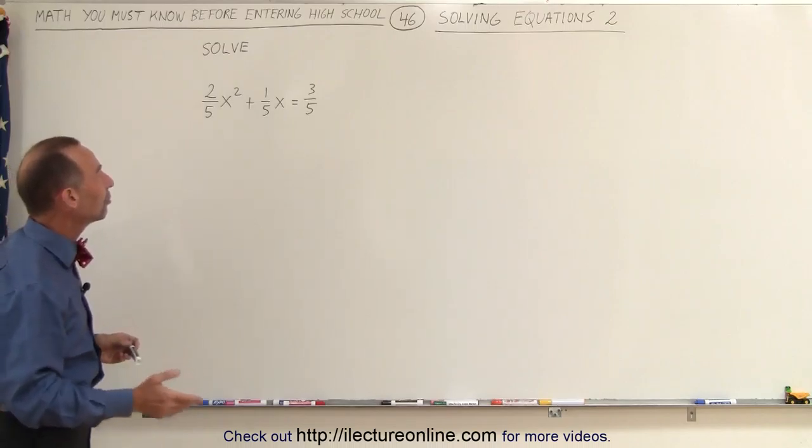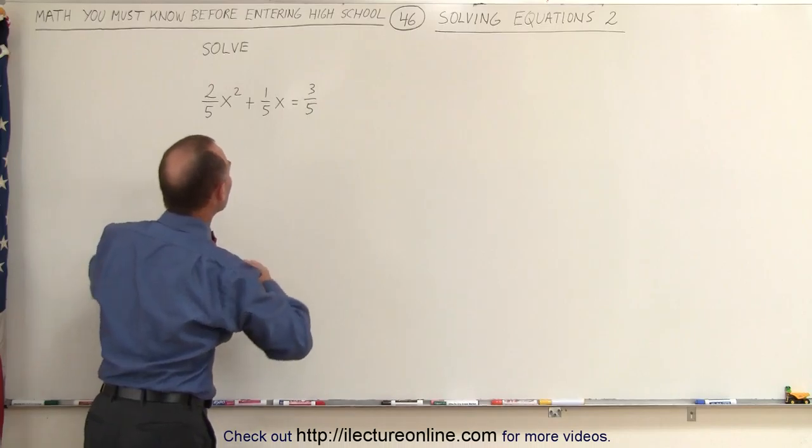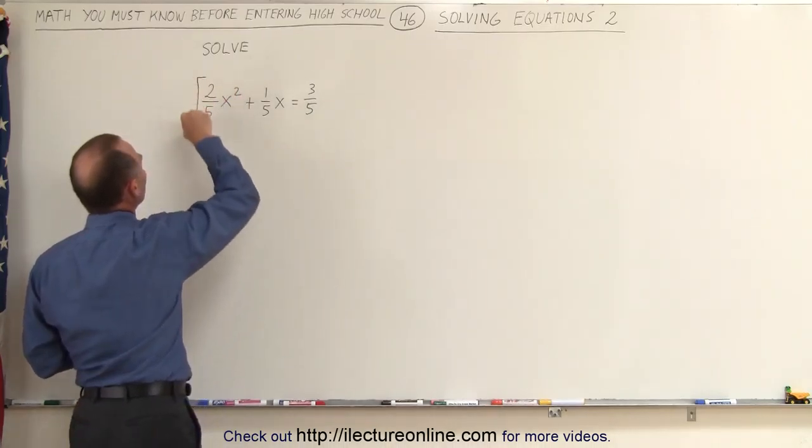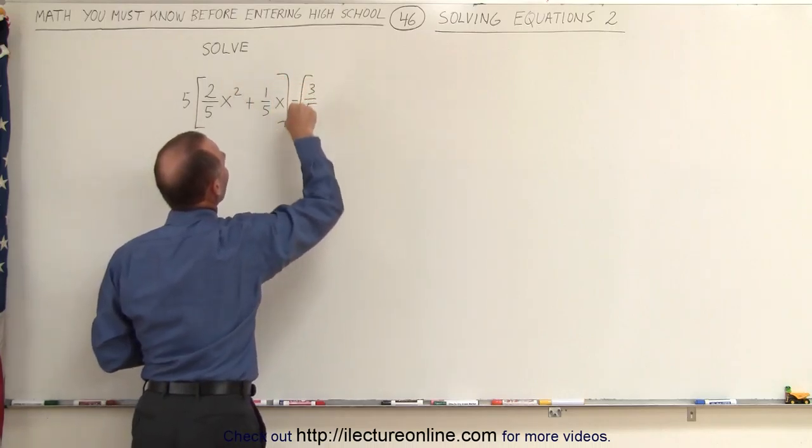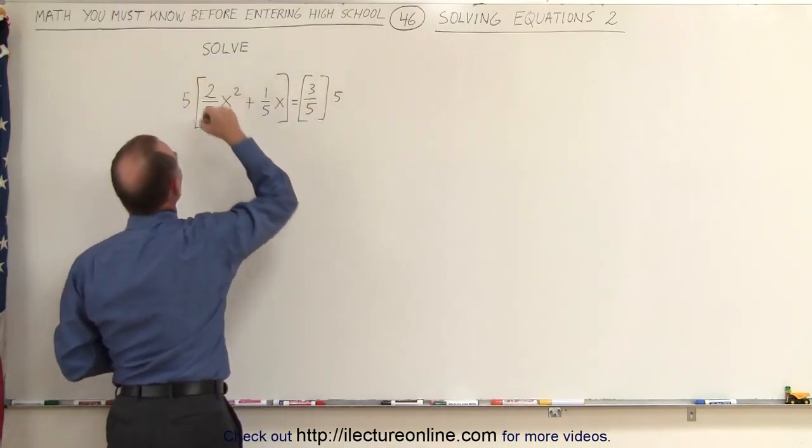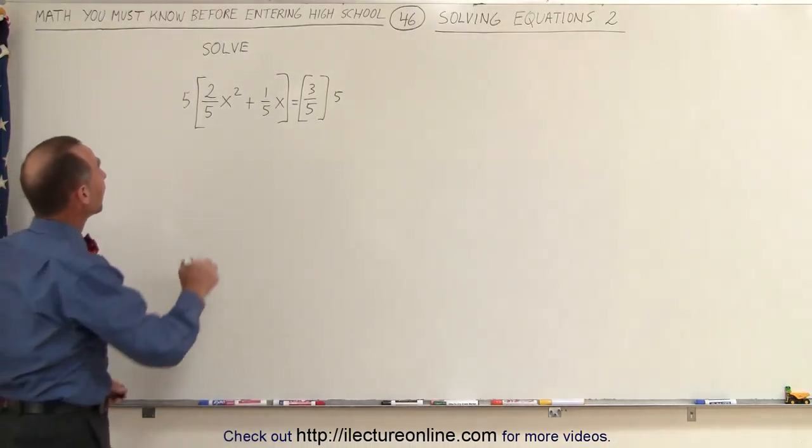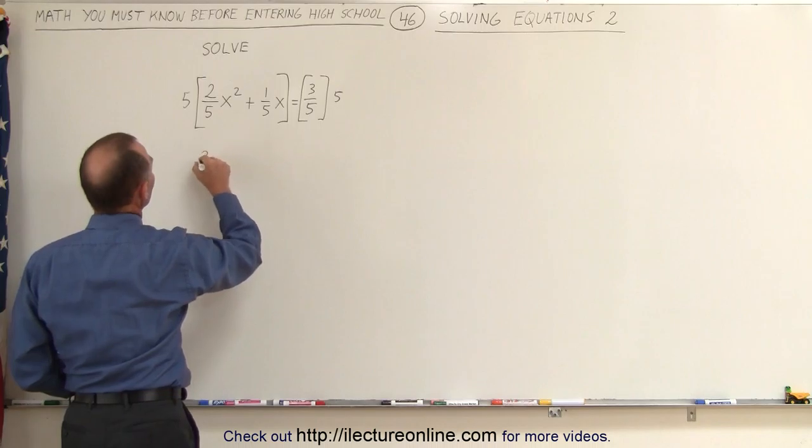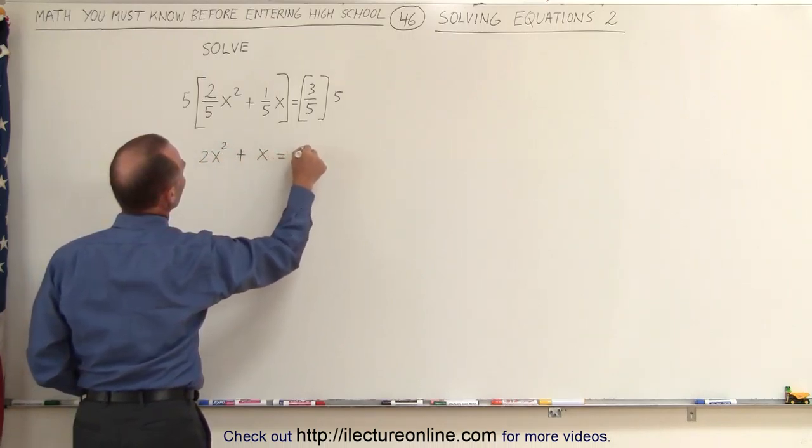So in this case, we're going to get rid of the fractions by multiplying both sides of the equation by the denominator. In this case, the denominator is 5, so we'll multiply the left side by 5, and we multiply the right side by 5. By doing that, we will get rid of the fractions. All right, so let's go ahead and do that.